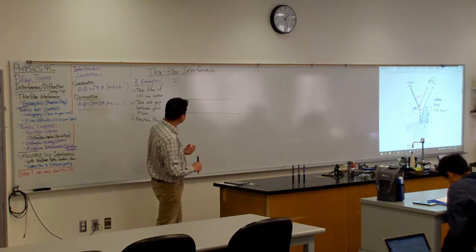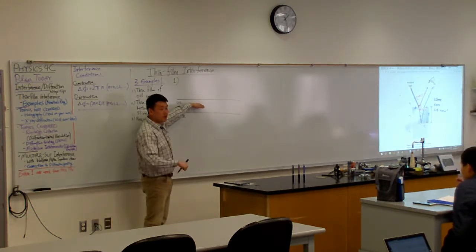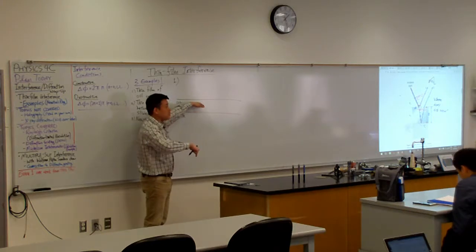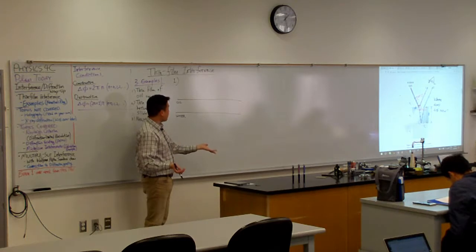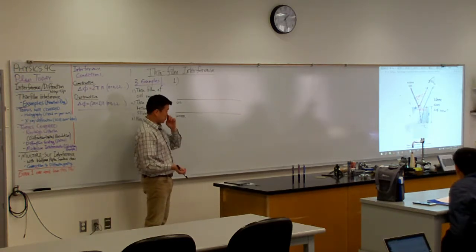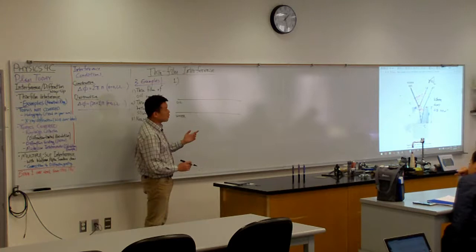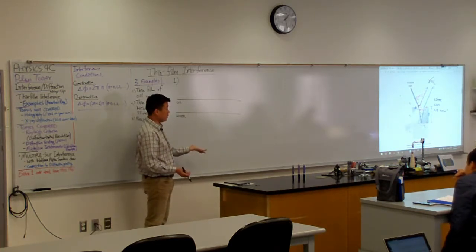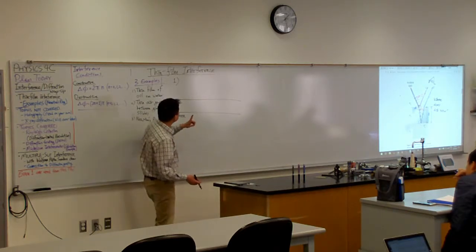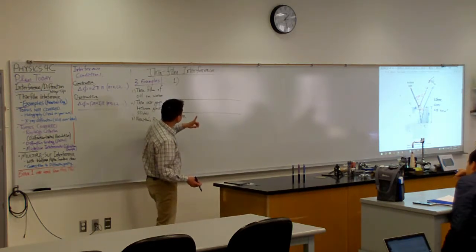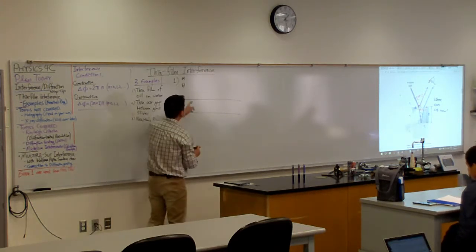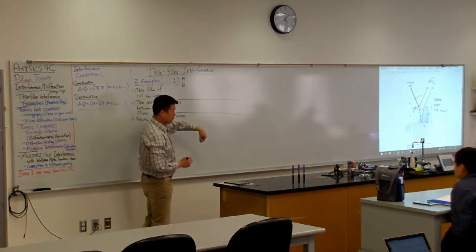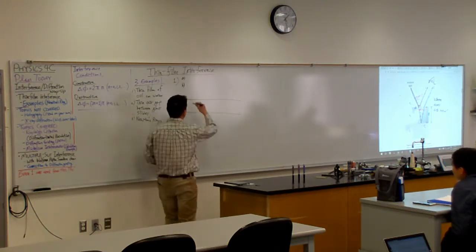So thin film of oil on water. And this is the typical way a question might be worded, like on your homework question that I'm gonna assign soon. A question might say, so you have some oil slick and as you are looking at it from above, you see bright fringes.